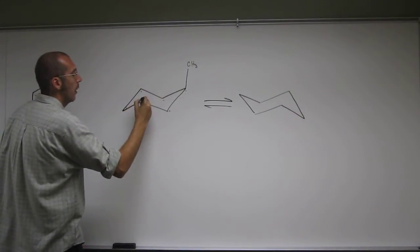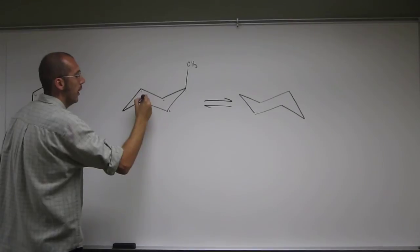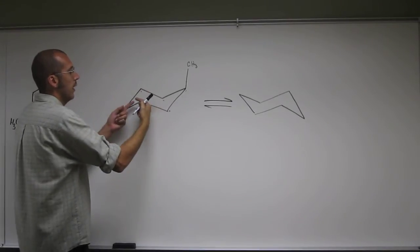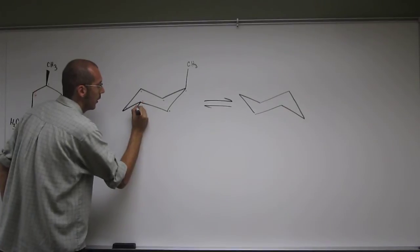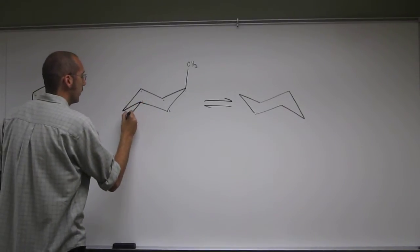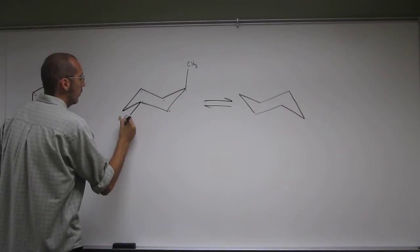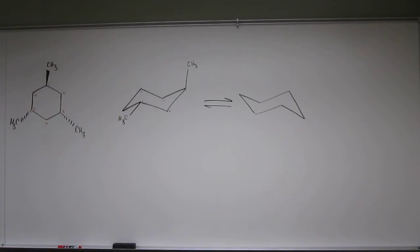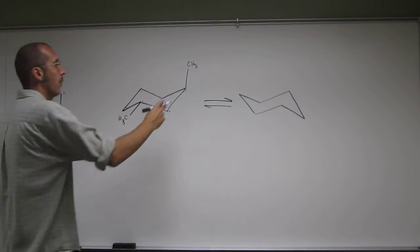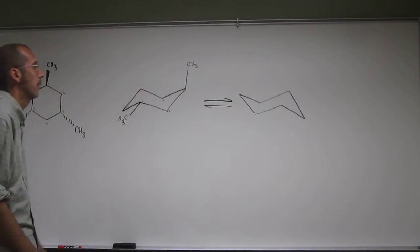So remember, up on the chair structure is straight up from the point where it's up. So down is not straight down, but in this case, to the left there. And we'll put our methyl group. Okay. So you can see we've got one axial, one equatorial already, methyl group.